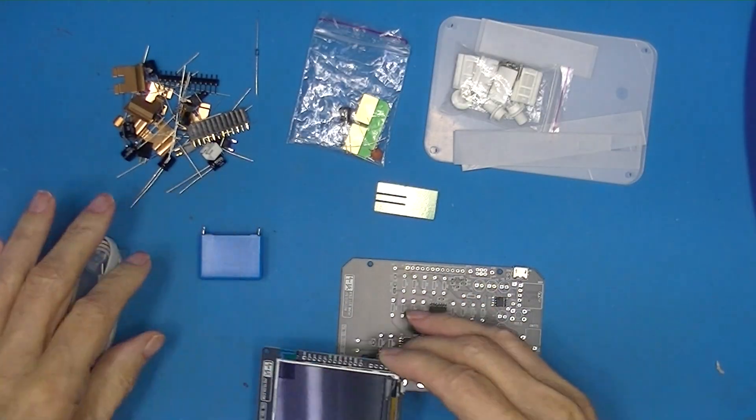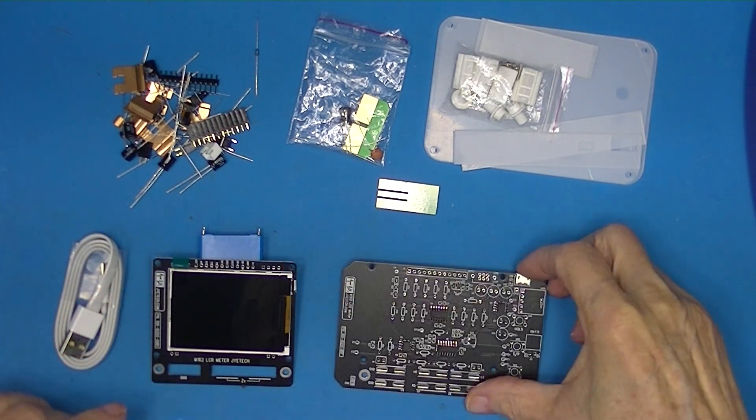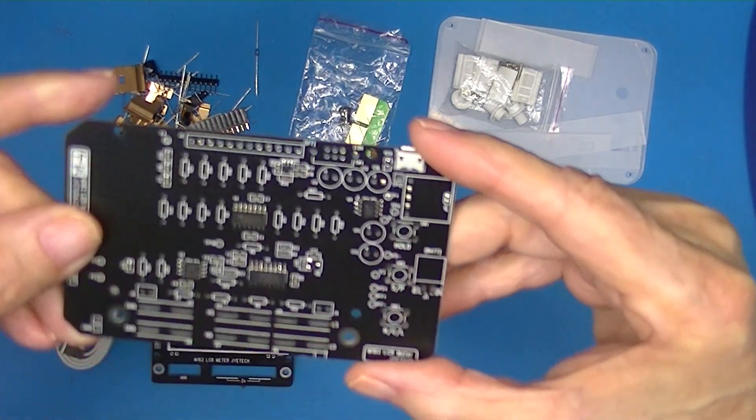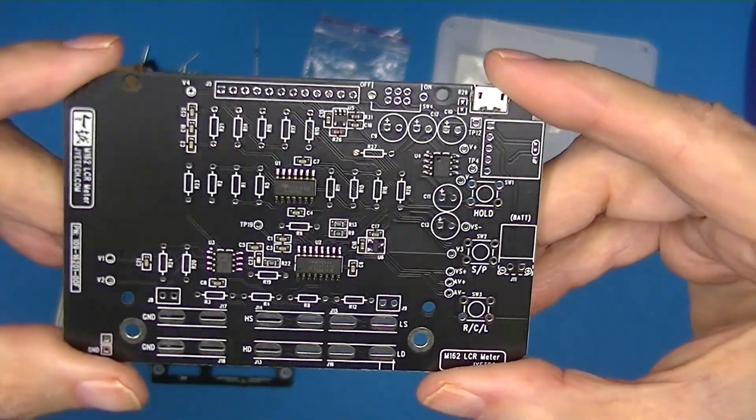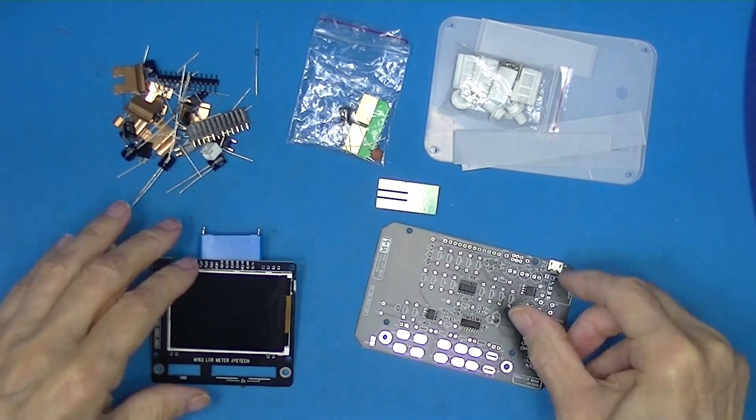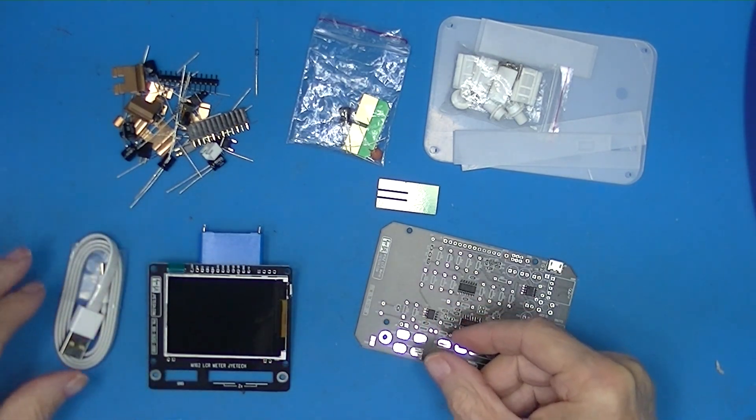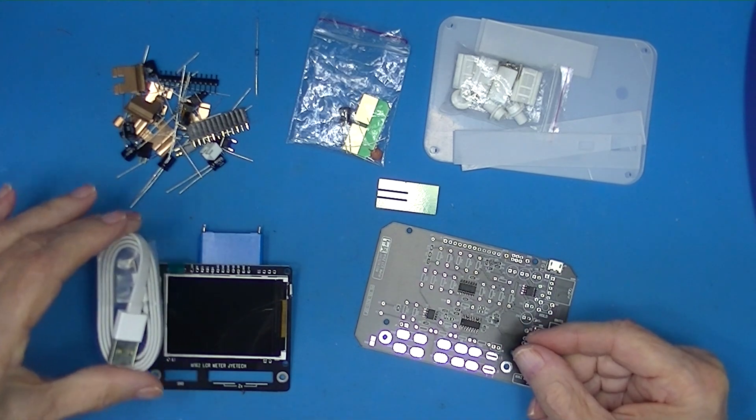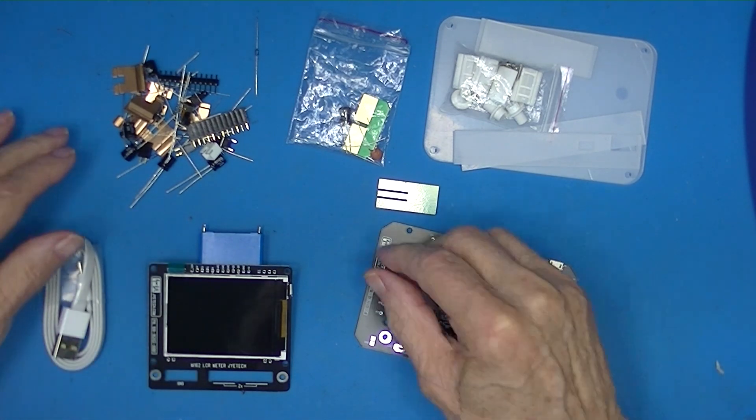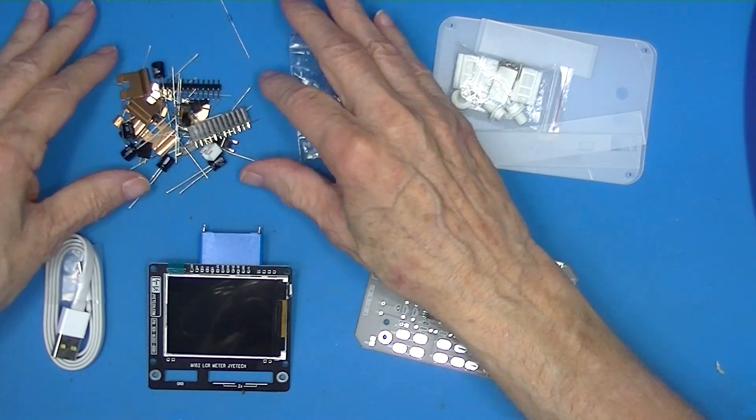This is not part of the kit. This is a circuit board. It has some surface mount components on it already. A USB cable and a cast of characters. They include all kinds of things.